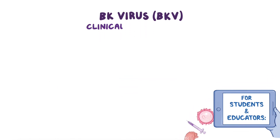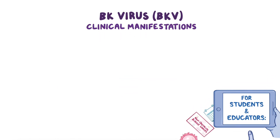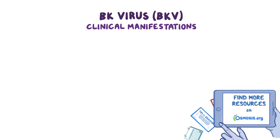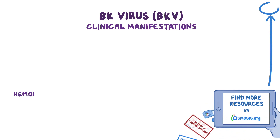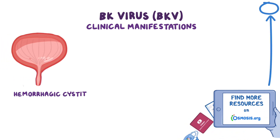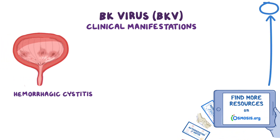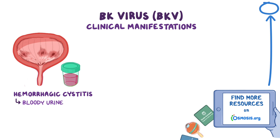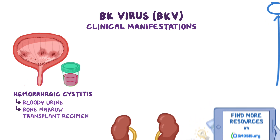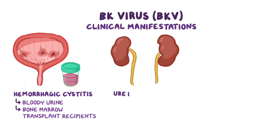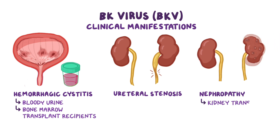Major clinical manifestations of BKV infection include hemorrhagic cystitis, which is inflammation of the urinary bladder associated with bloody urine in bone marrow transplant recipients, ureteral stenosis, or narrowing, and nephropathy in kidney transplant recipients.